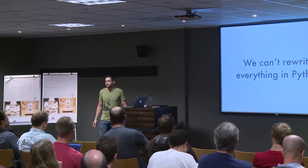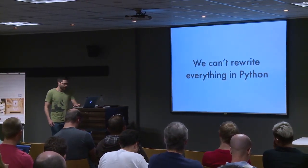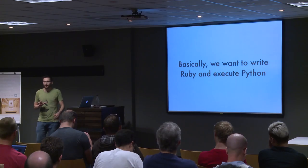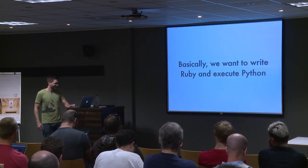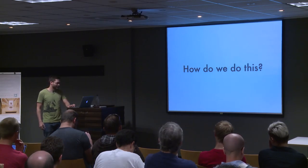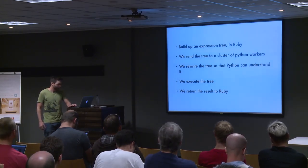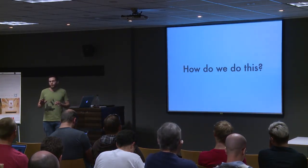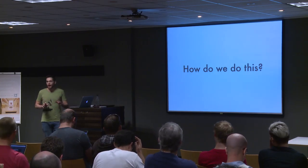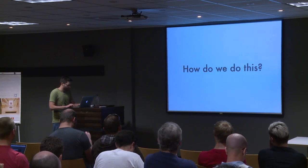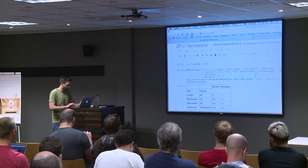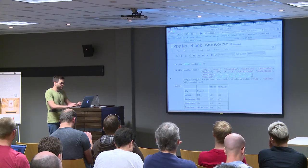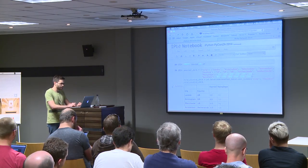The problem is we can't rewrite all of our code in Python — we have tons of Ruby code and tons of Ruby developers, so we can't lose all that experience. Basically what we want to do is write Ruby, use Ruby as a modeling language, but execute Python. So how do we do this? Let me start off by showing you what we have and then I'll show you how we got there. I'm going to switch to a notebook.